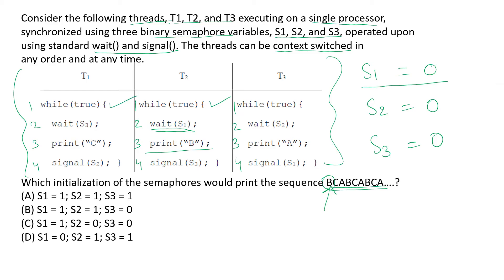Looking at concurrent execution, we can also get past line one of another process, but we will get stuck since the initial value of S3 is assumed to be zero. Similarly, looking at line one of process T3, we can get past that, but again we get stuck at line two because we have assumed all semaphore values to be zero.